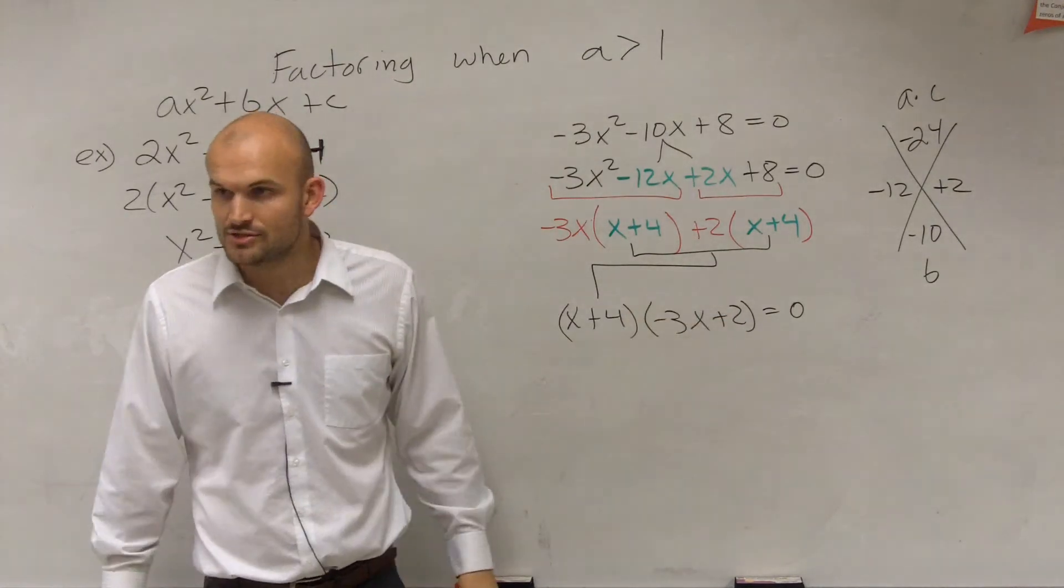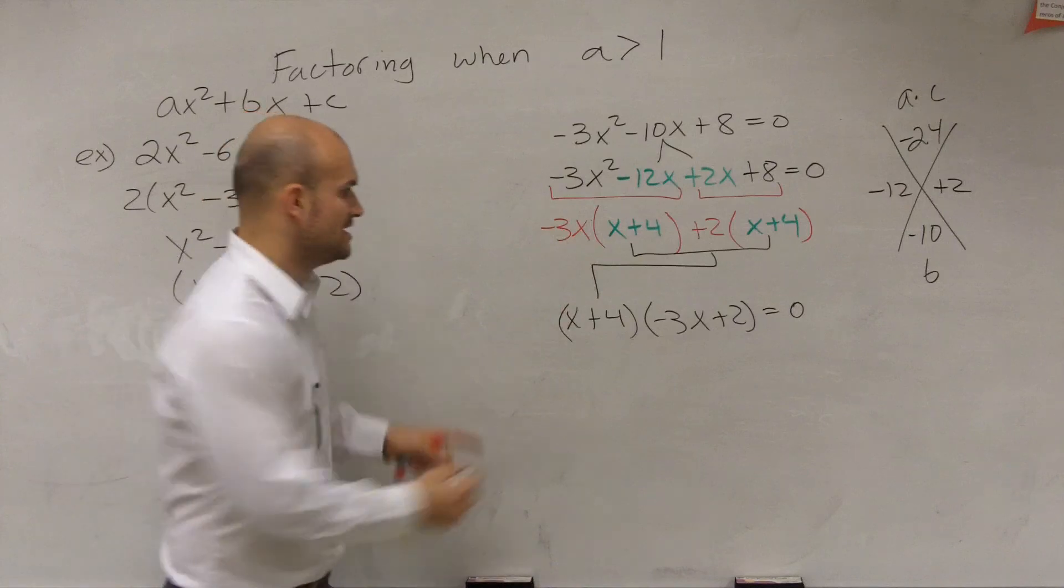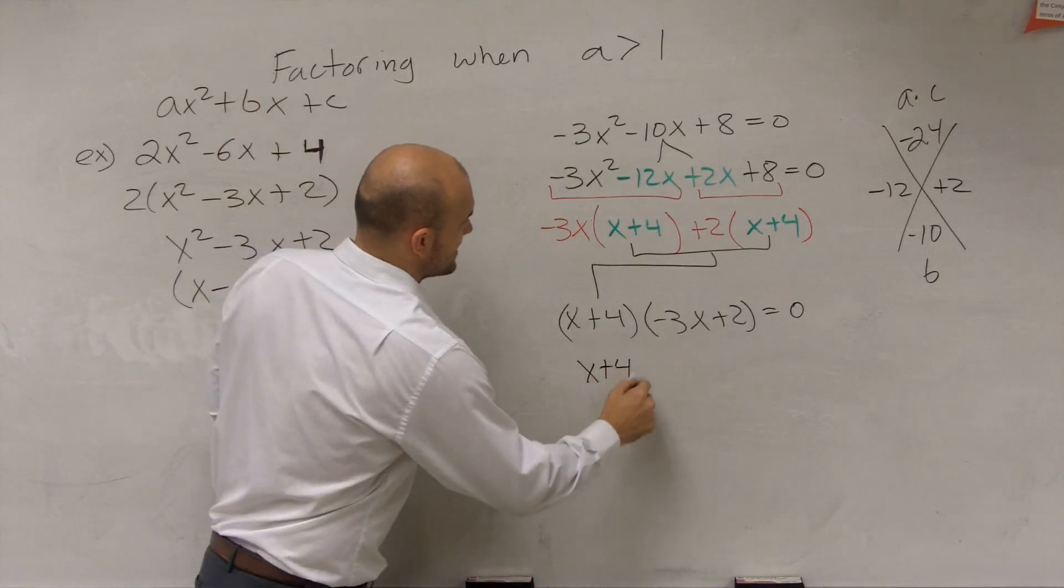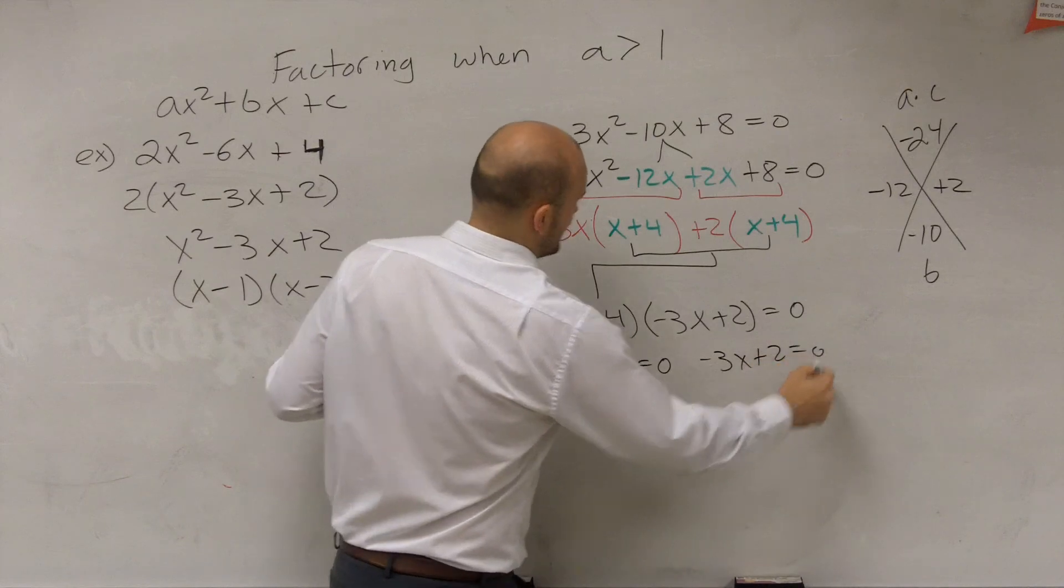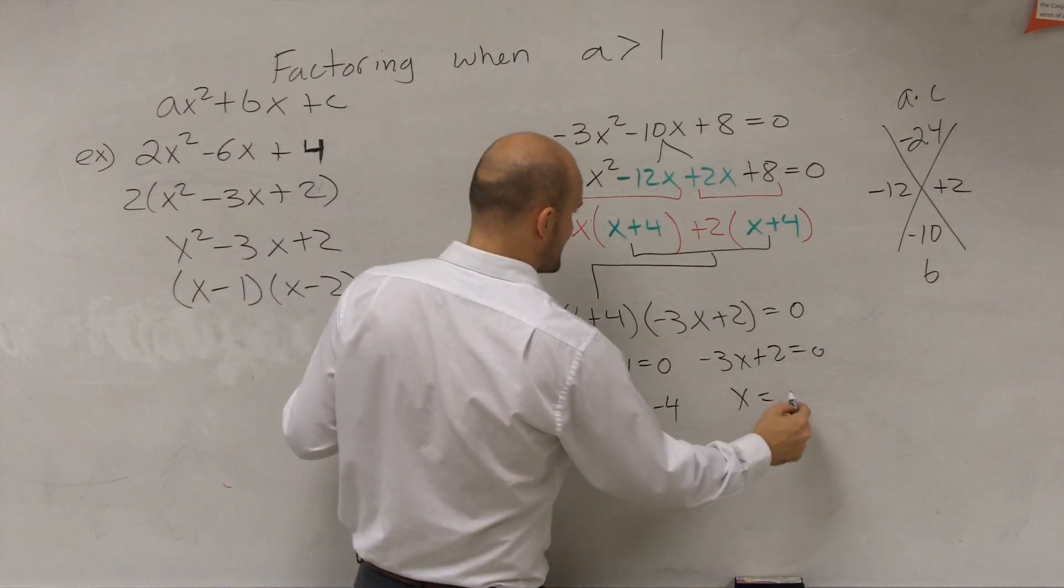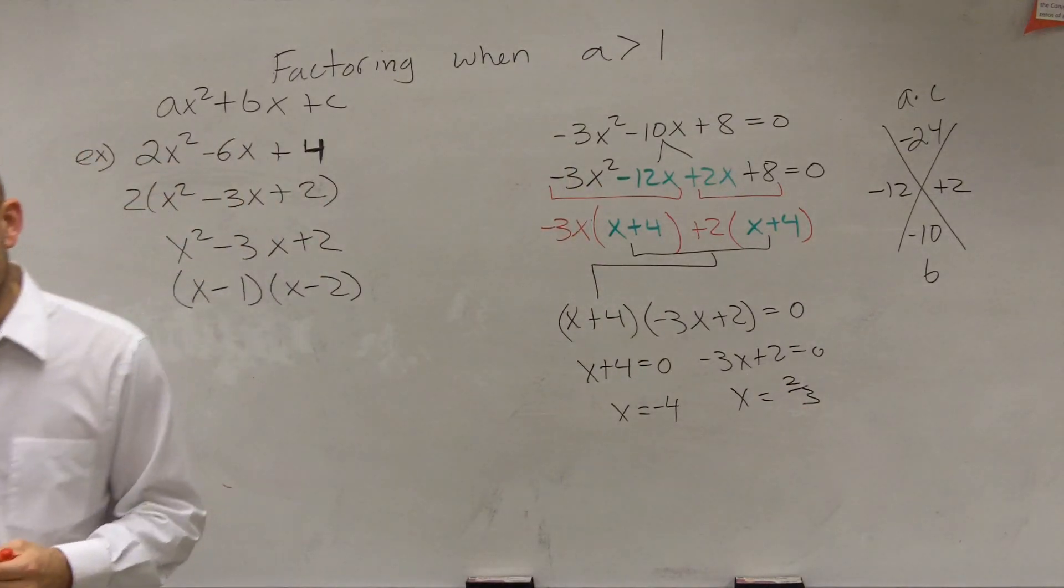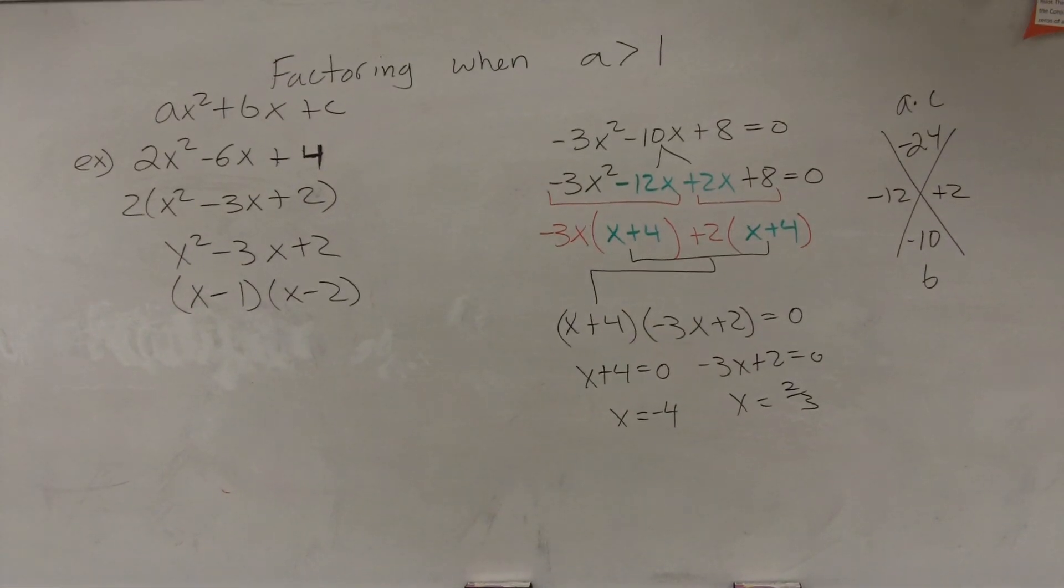Now it's written as a product of two factors. Since you have two numbers multiplied to give you 0, either one can equal 0. Therefore, your answer is x = -4 and x = 2/3. Perfect timing. We'll go back over this more next class period.